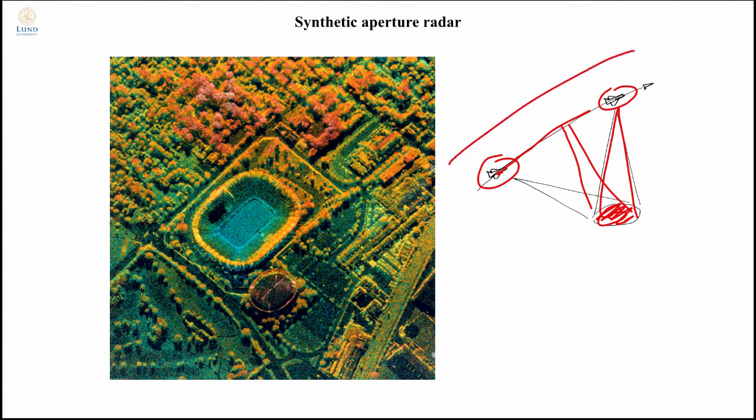The resolution on the ground will then be dictated by the width of your synthetic aperture. And of course, if you want to see fine details on the ground from space, you would really want to have a high resolution on the ground given the aperture you were able to construct using your flight path.